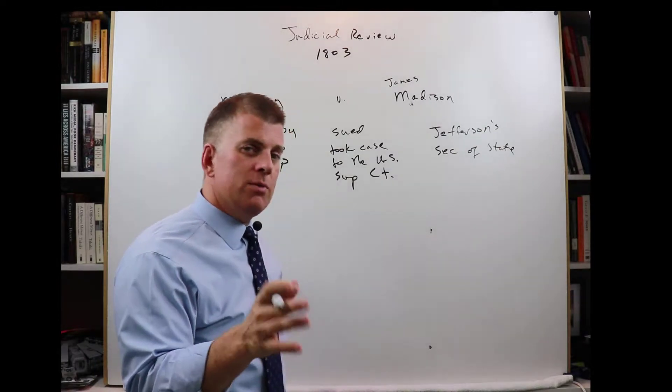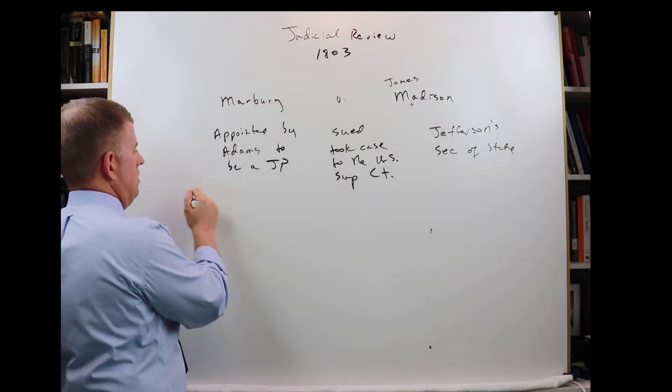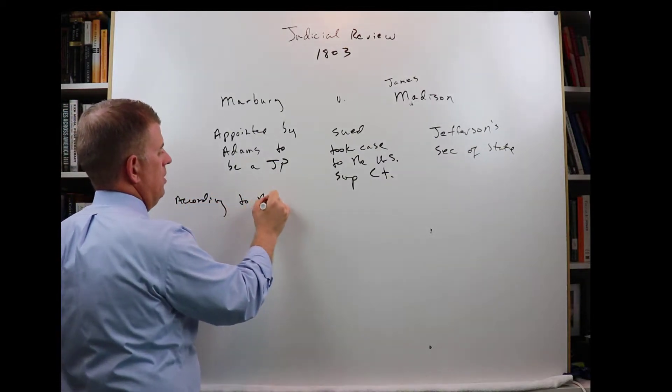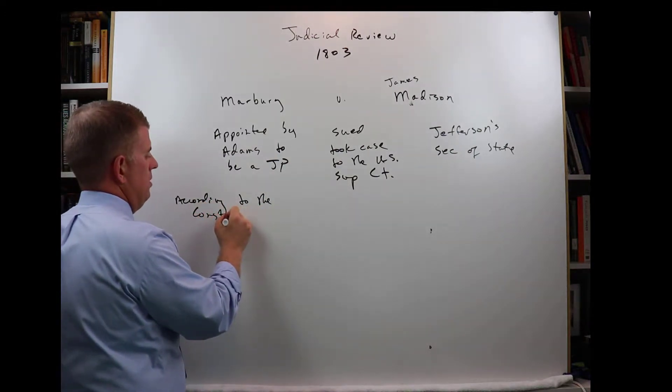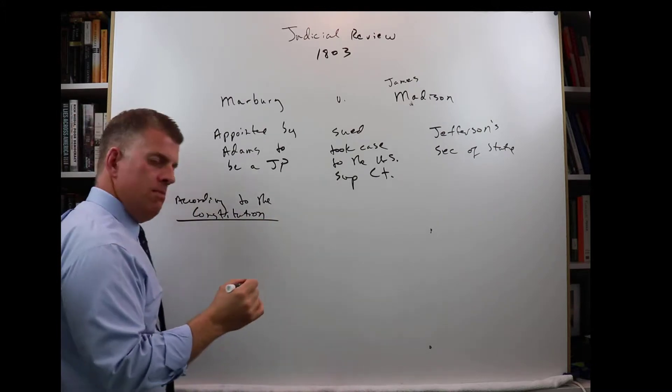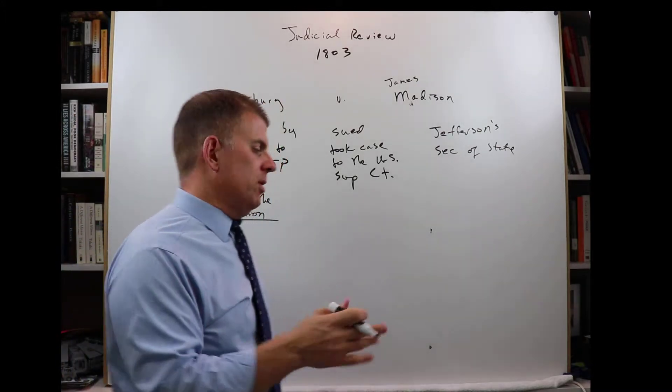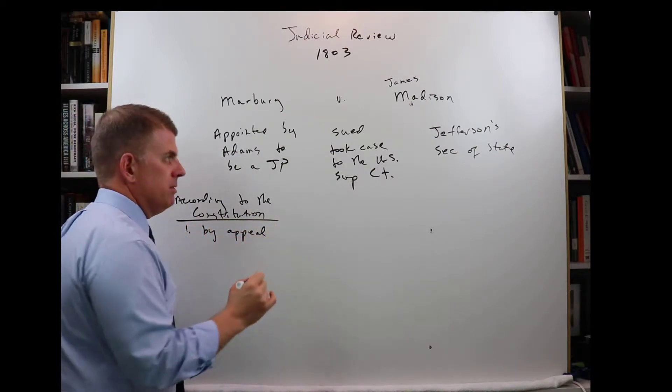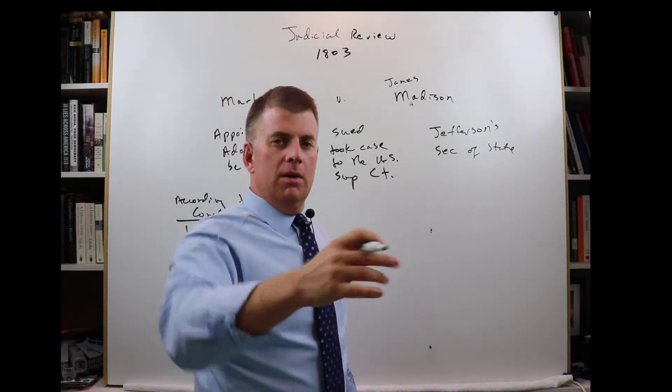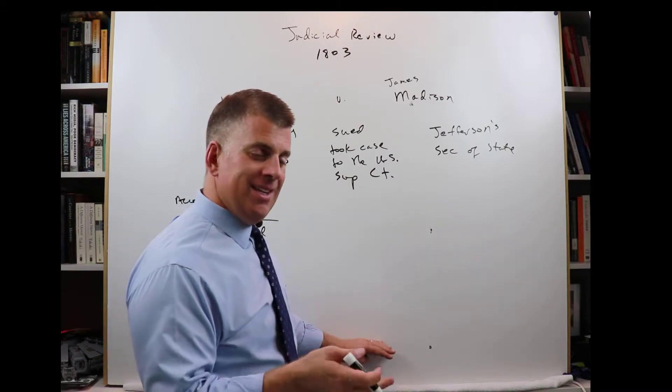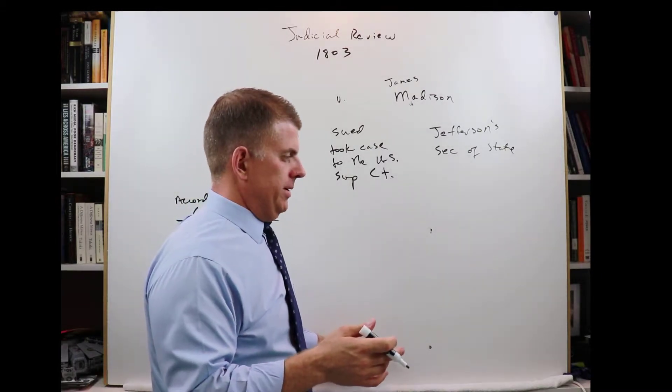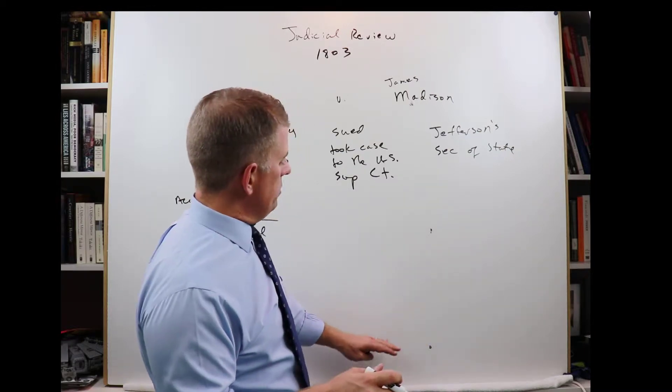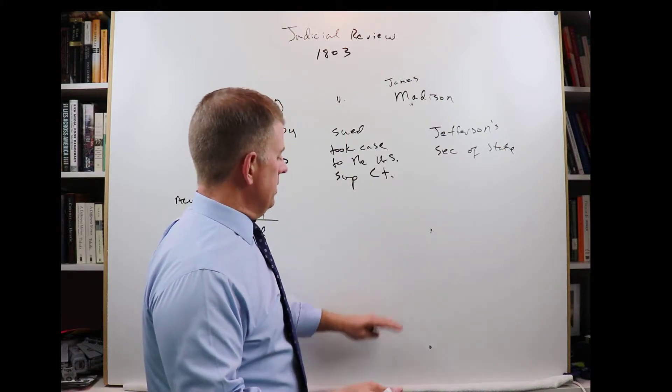Well, we need to know a couple of things. According to the Constitution, there's two ways that a case reaches the Supreme Court. The first is by appeal or on appeal. For the most part, the Supreme Court is an appellate court. It means that you have to file your case in a lower court, a federal district court or a lower court at the state level, and then you have to lose.